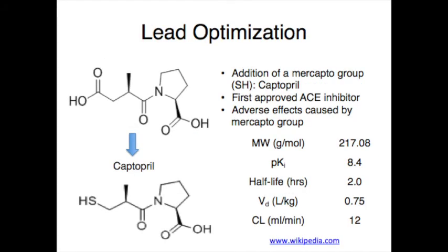Later, it was found that replacing the carboxyl group with the sulfhydryl functional group had greater affinity for the enzyme-bound zinc ion and was 1,000 times more potent than succinyl-L-proline. Thus, D-3-mercapto-2-methylpropanoyl-L-proline, also known as captopril, was created as the first orally active ACE inhibitor.